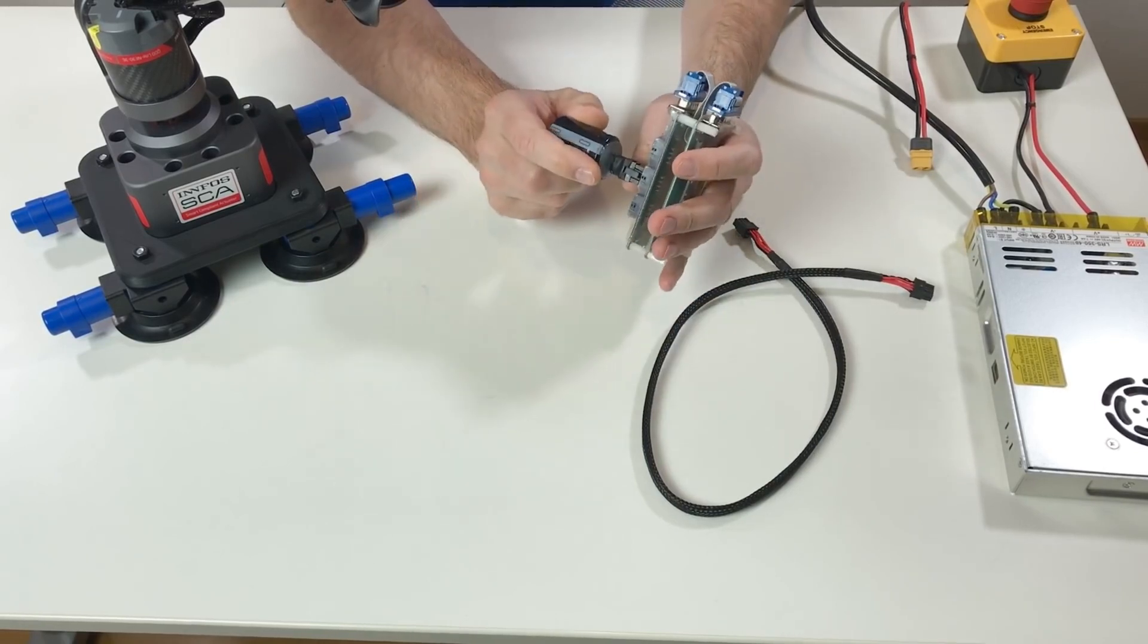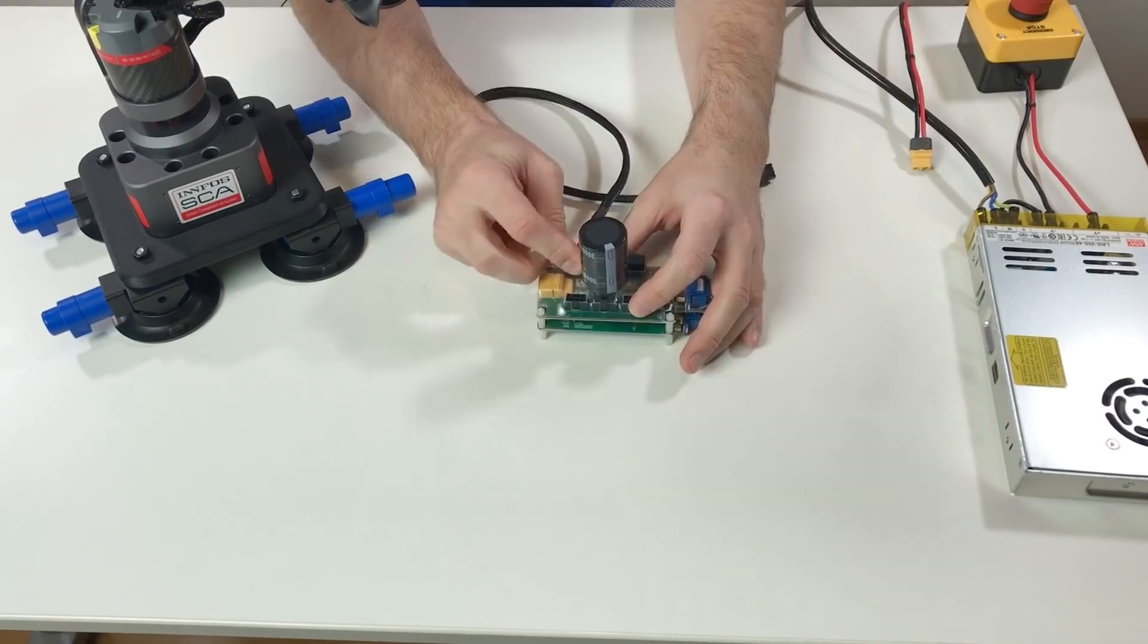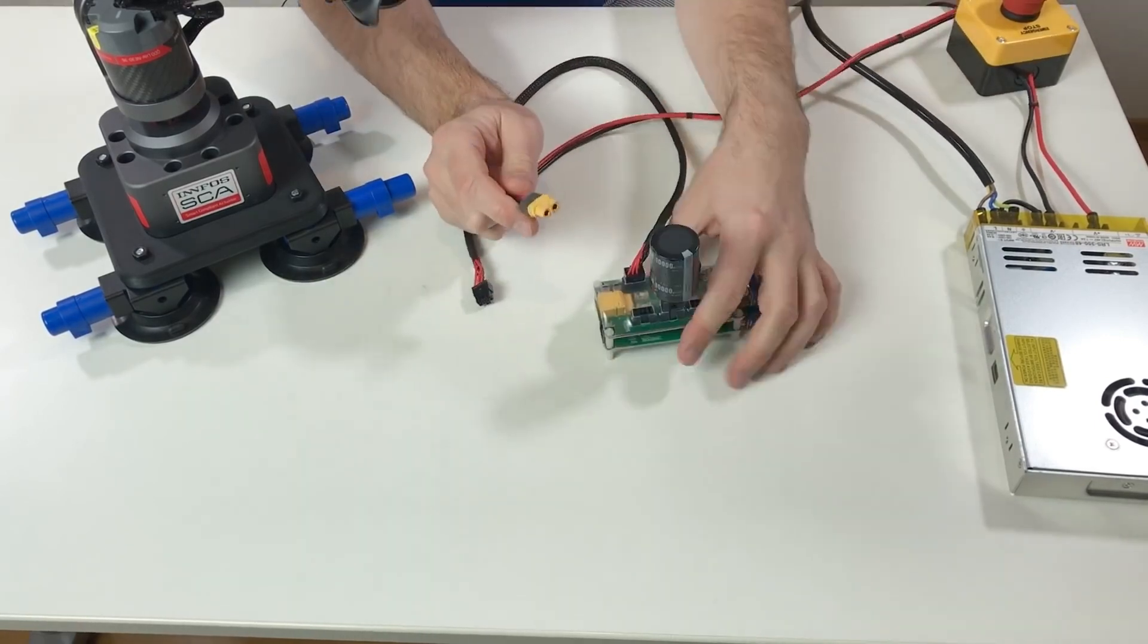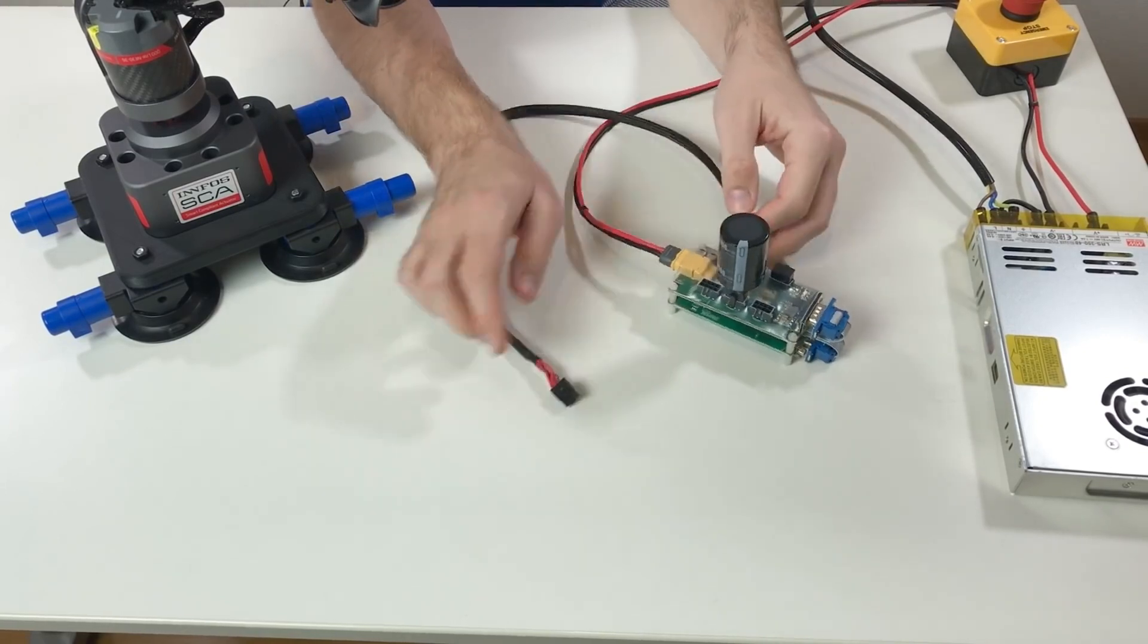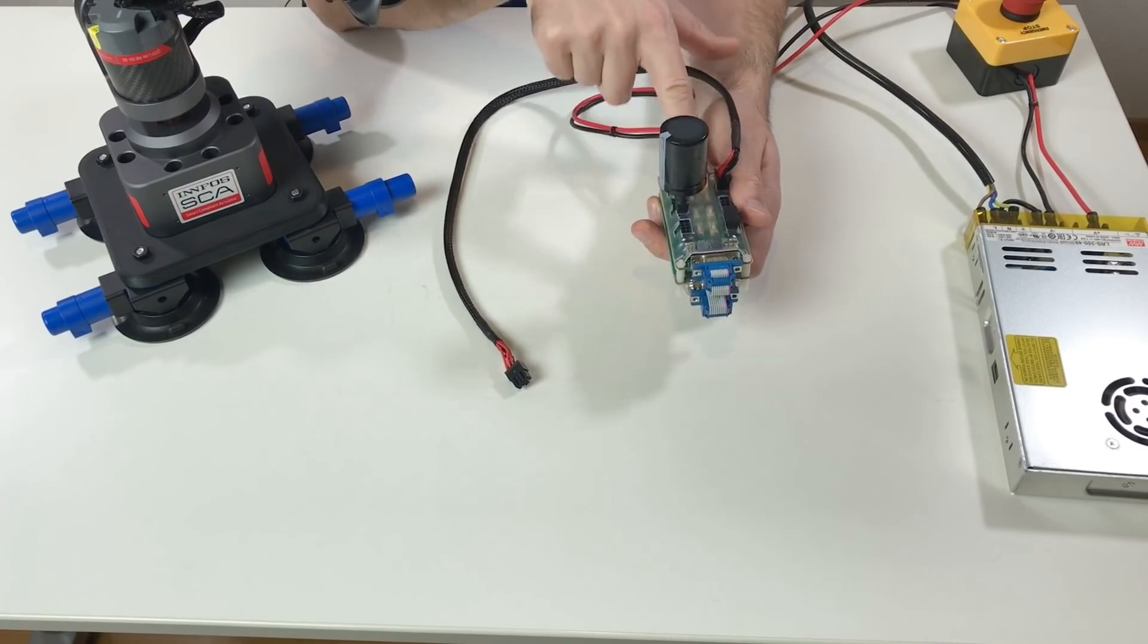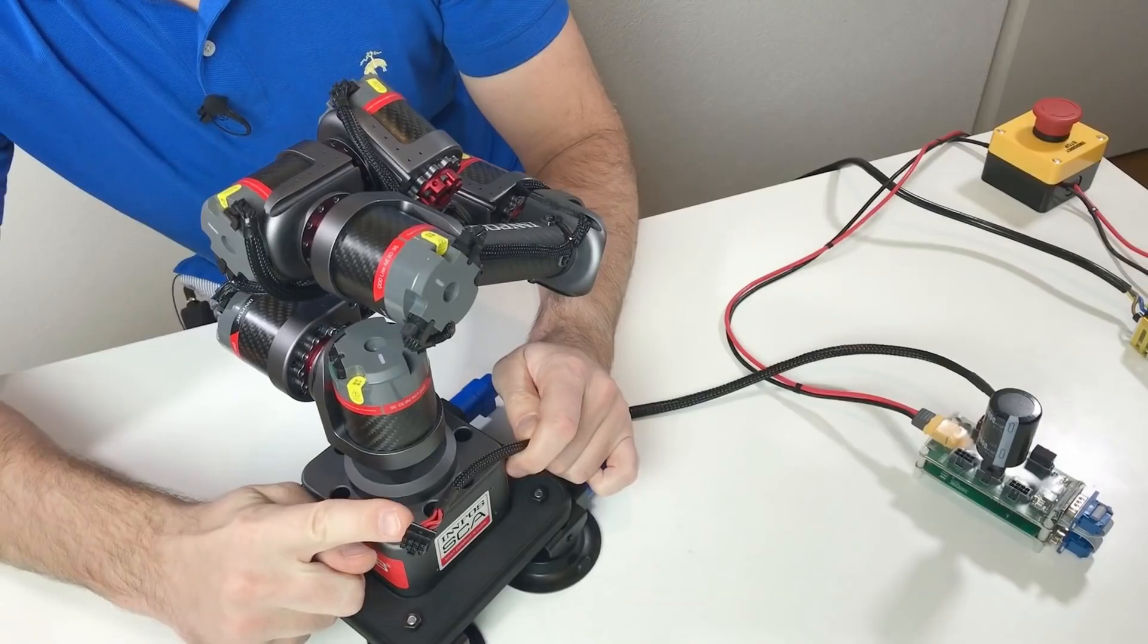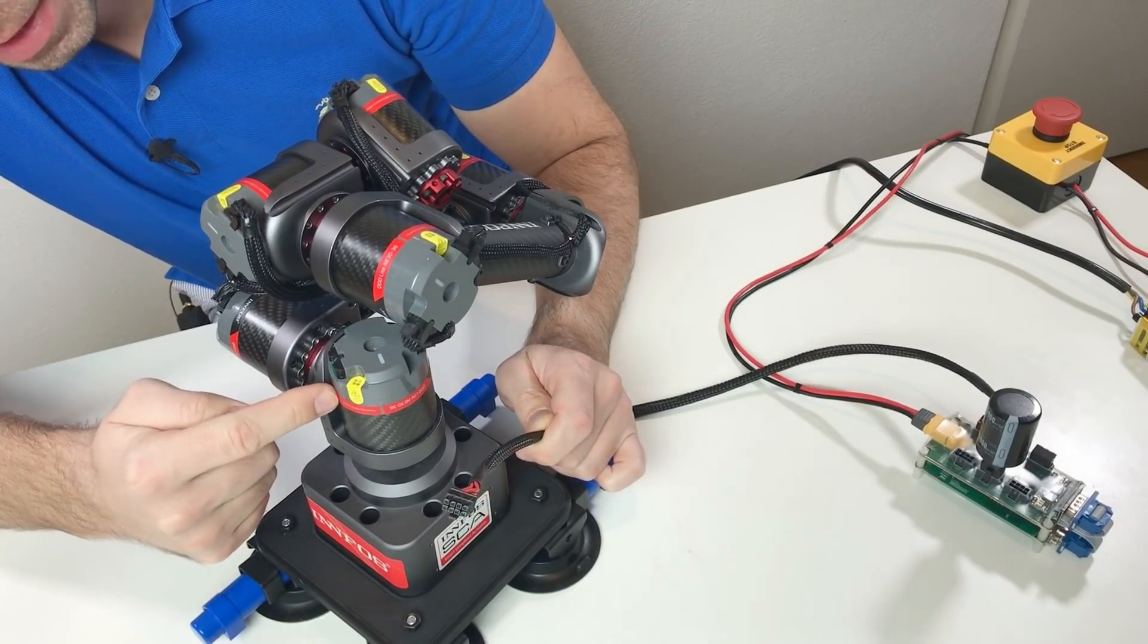So the capacitor goes somewhere, doesn't really matter where to put it. The cable goes here. The cable from the power supply. This end of the cable will connect to the robot. Also what is nice is that this board has fuses for each port of the CAN buses. This end of the cable should go to the first actuator, so the actuator of axis number 1.